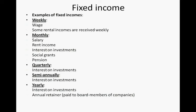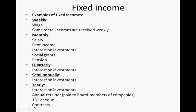An annual retainer is paid to board members of companies, and if it's a very large company, the annual retainer can be very large. A thirteenth cheque: when you work for the government, you receive a second salary in the month of your birthday. That thirteenth cheque can be included in your budget because it's part of your contract. Contract posts also usually pay a yearly fee — a fixed amount per year for a contract you have completed.